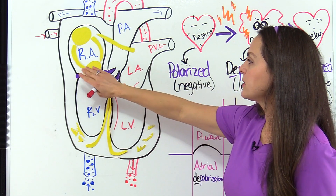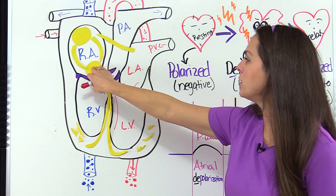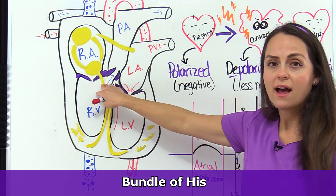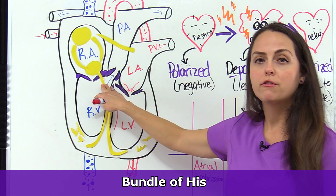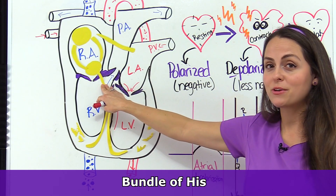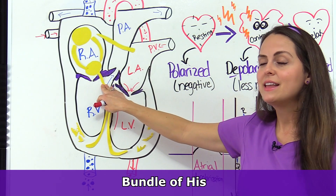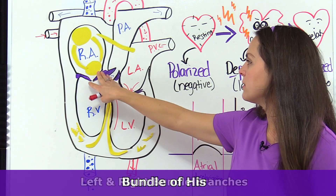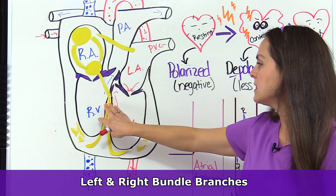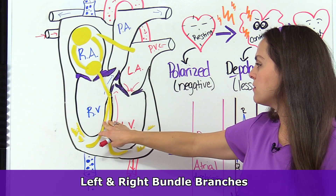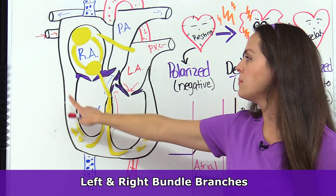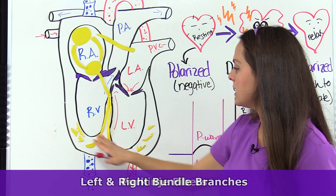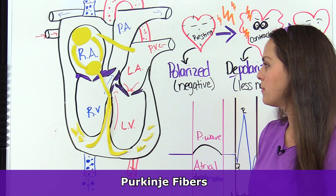So the signal will leave the AV node and go down to the bundle of His. Now we're ready for ventricular depolarization, which is going to lead to contraction of the ventricles. It goes down through the bundle of His, then down through the bundle branches — you have the right bundle branch and the left bundle branch — and then it hits the Purkinje fibers.